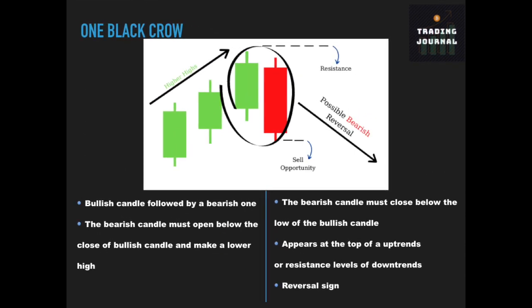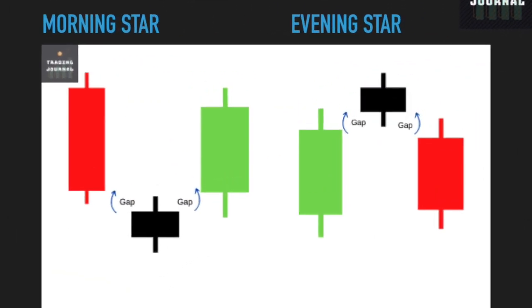The one black crow is the bearish version of the one white soldier. It appears at the resistance levels of downtrends or at the top of uptrends. The bearish candle must open below the close of the bullish candle and make a lower high. Also, the bearish candle must close below the low of the bullish candle. It indicates that bears are getting stronger and there is a high chance that the price will go down.